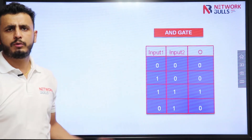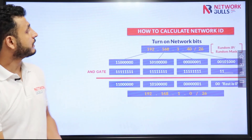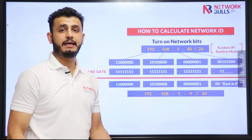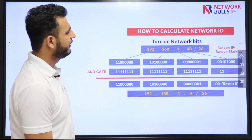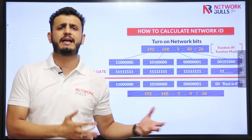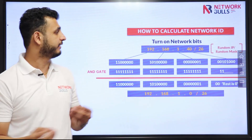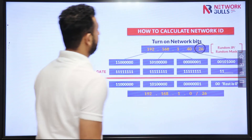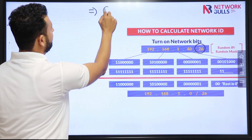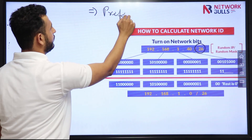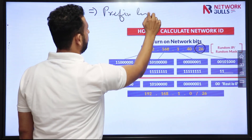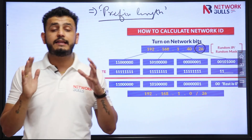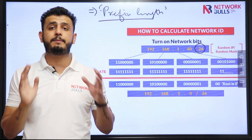Here is another example. I have IP 192.168.1.40 slash 26. This slash value is called prefix length, and prefix length is just another way of representing subnet mask. The prefix length directly defines how many network bits there are.